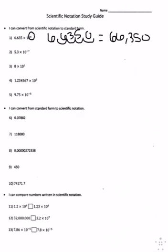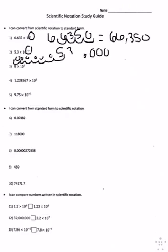For number two, you're going to move the decimal seven times — one, two, three, four, five, six, seven — fill it in with zeros. And so you get .00000053.